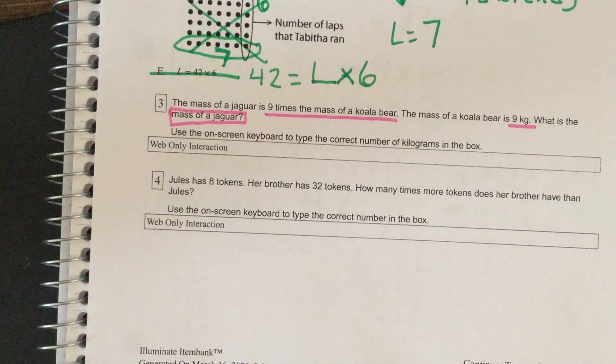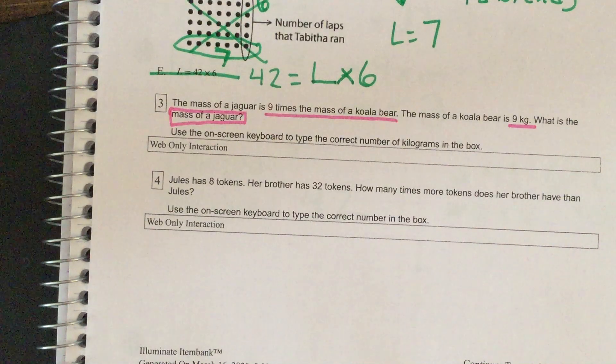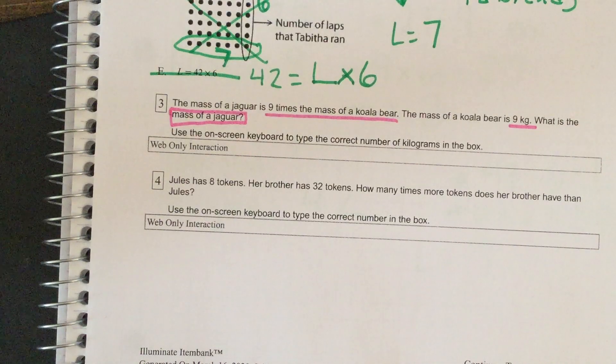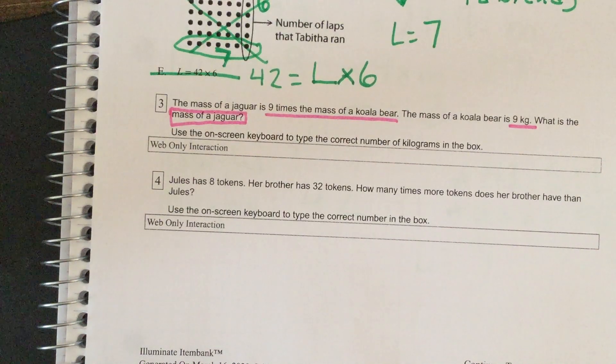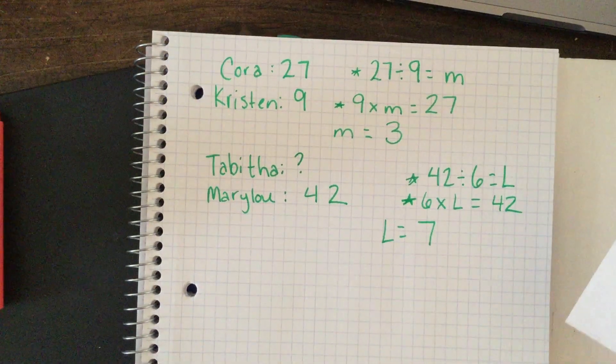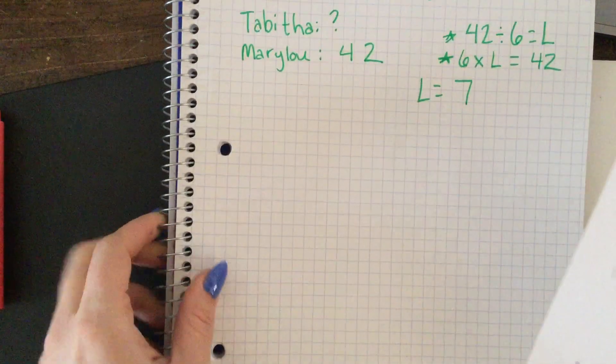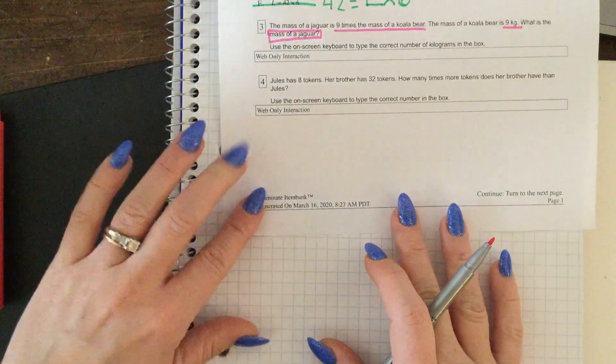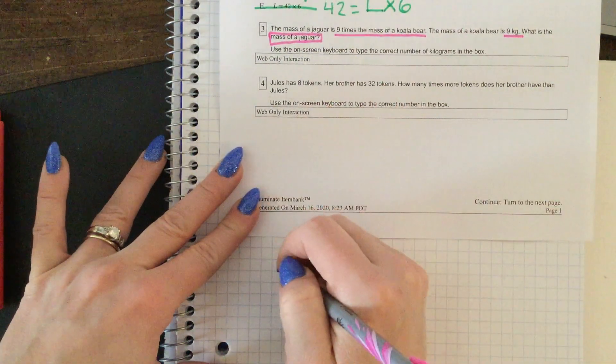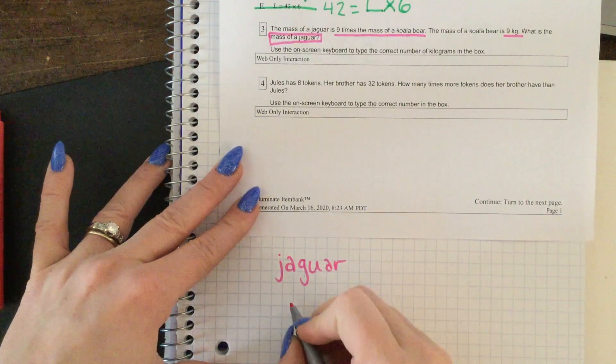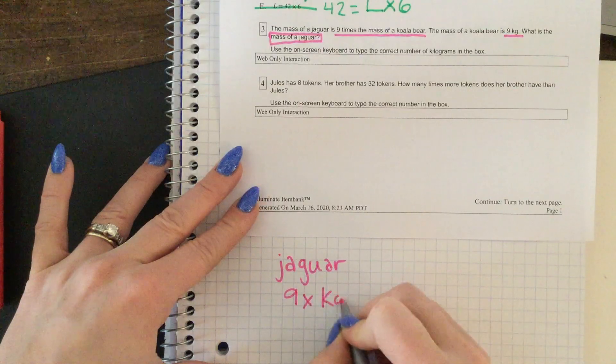Remember, if we were doing this online we could type in our answer, but because we're doing it on paper here, we're just gonna write it here. So, the mass of a jaguar is nine times the mass of a koala bear. The mass of a koala bear is nine kilograms. Let's set up an equation. Here's the jaguar - it's nine times the koala.